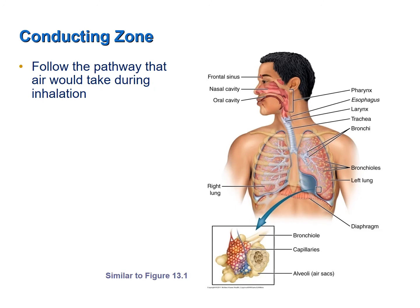We will now discuss the Conducting Zone following the path that air would take toward the lungs. We will start with the nasal cavity, then move to the pharynx, then the larynx, the trachea, the bronchi, and we will end in the terminal bronchioles.